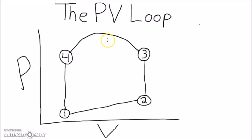The PV loop is a neat diagram to help you understand how the heart works. On the y-axis is pressure, and on the x-axis is volume.